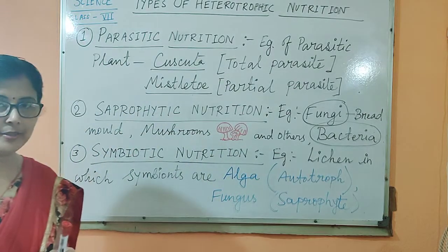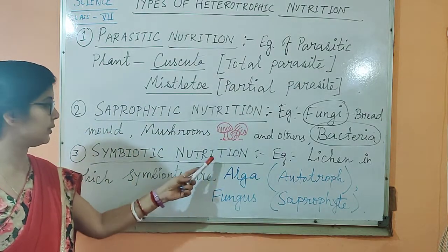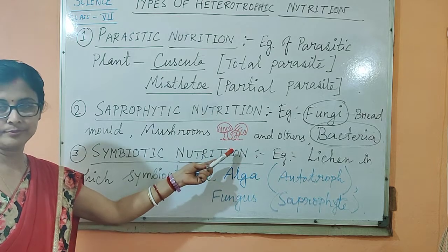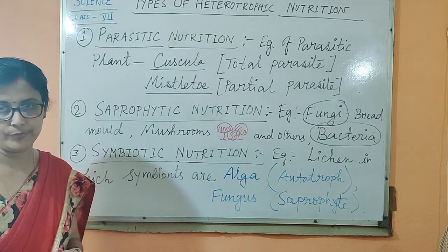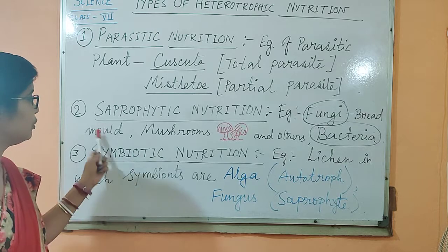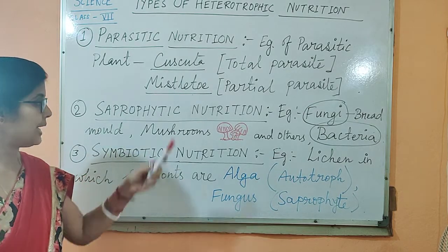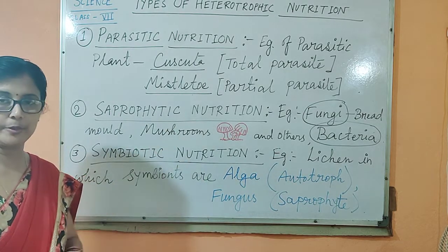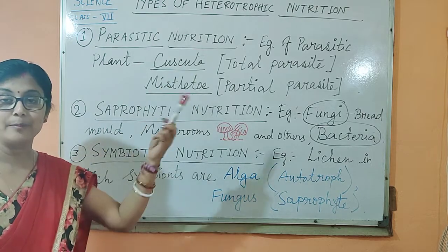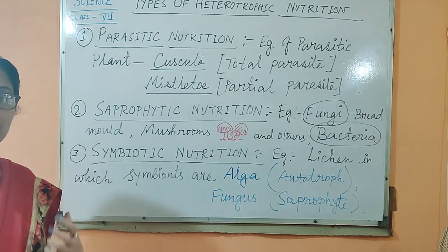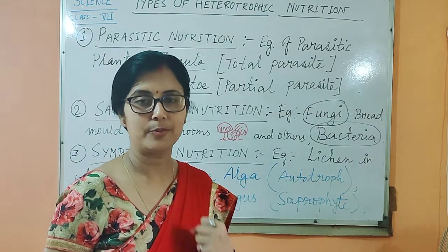Saprophytic nutrition is the mode of nutrition in which non-green organisms — which lack the photosynthetic pigment — absorb nutrition from dead and decaying materials, like dead bodies of plants and animals, leftover food, rotten food, and rotten bread. Examples include fungi like bread mold and mushrooms. Fungi basically follow saprophytic nutrition, which is an absorptive type of nutrition — not digestive type, but absorptive type.